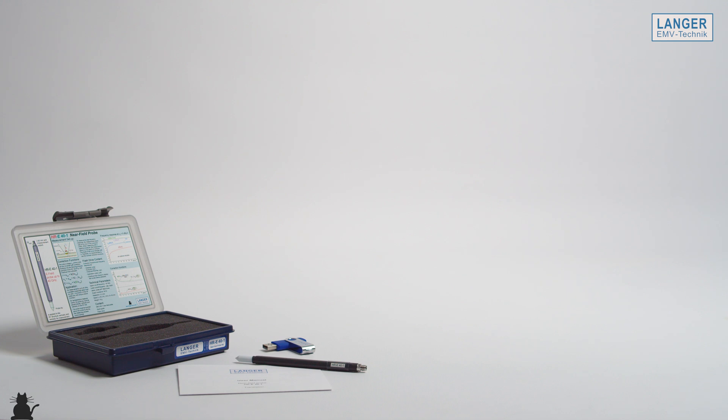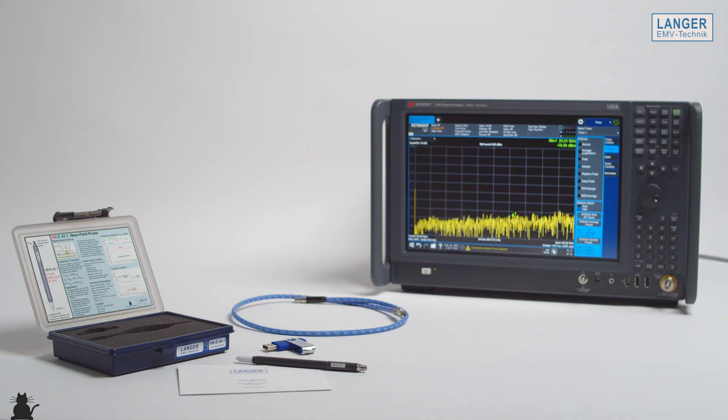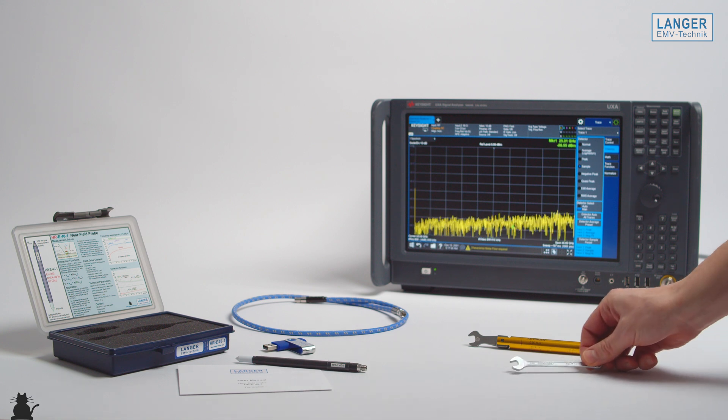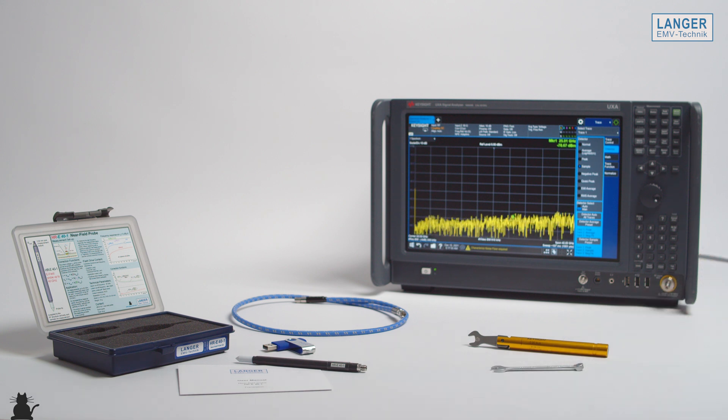For measurements with the HRE40-1 set, a microwave cable with 2.92 mm connector and an appropriate measuring device are required. In addition, a 5-16 inch torque wrench with 0.9 Nm and a ¼ inch open-end wrench are recommended for installation.